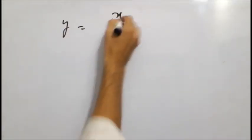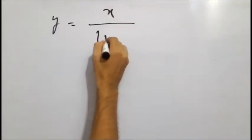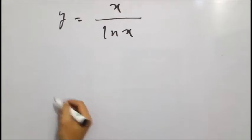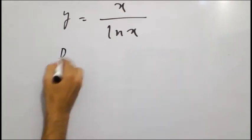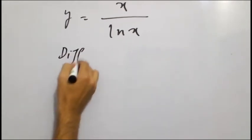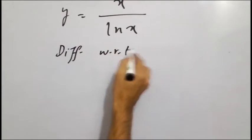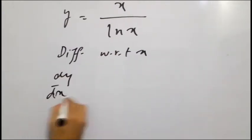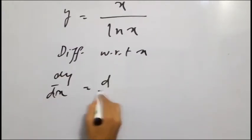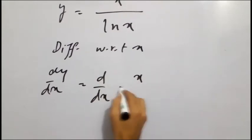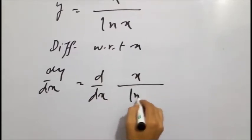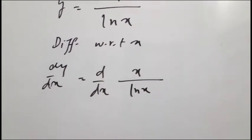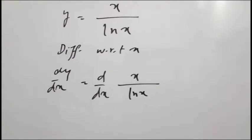y is equal to x over natural log of x. इसका derivative find करने हैं तो हम इसकी differentiation with respect to x करेंगे। dy over dx, d over dx into x over natural log of x — अब यहां पर quotient rule apply होगा।